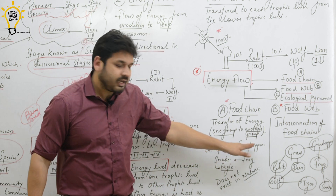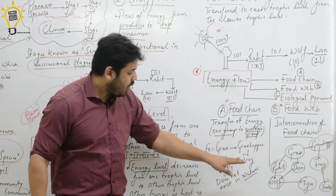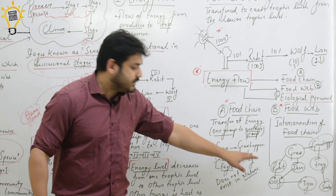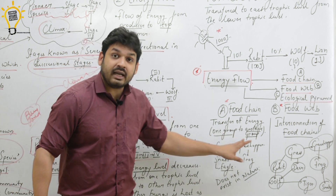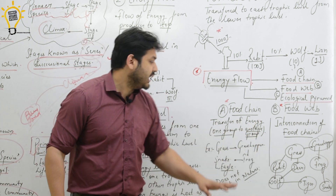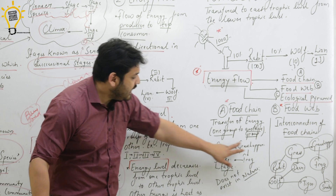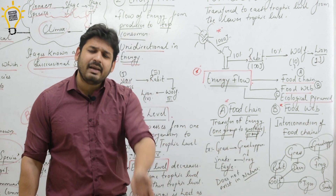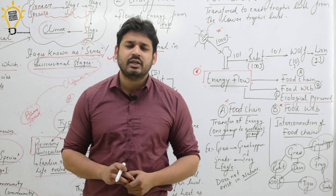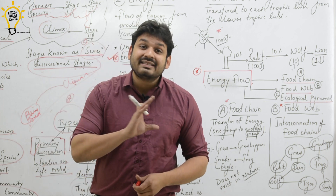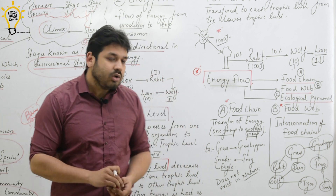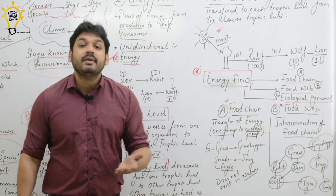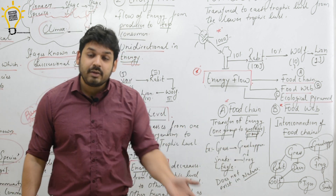For example: grass → grasshopper → frog → snake → eagle. Energy is transferred at 10% at each step. However, a simple linear food chain does not actually exist in nature, because grass or grasshopper cannot eat deer or rabbit.